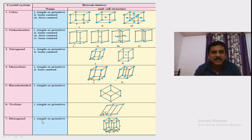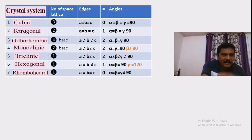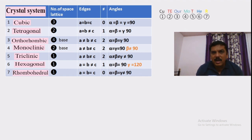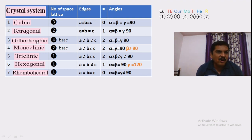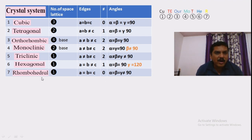In our textbook these different diagrams are shown, but the main thing is how to remember these crystal systems. There is a sentence to help: 'Cute Our Mother' — C for cubic, T for tetragonal, O for orthorhombic, Mo for monoclinic, T for triclinic, He for hexagonal, and R for rhombohedral. In this manner we can remember all seven crystal systems.